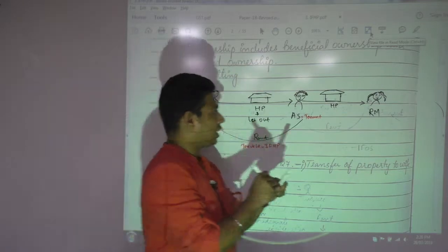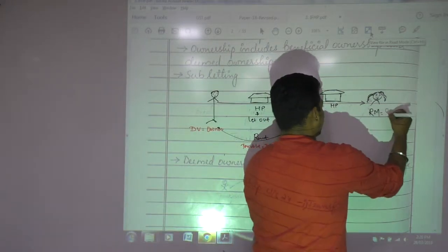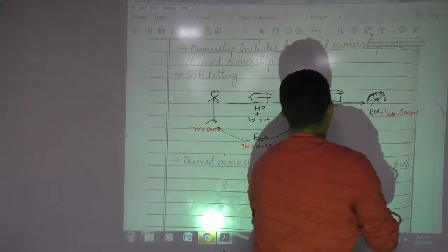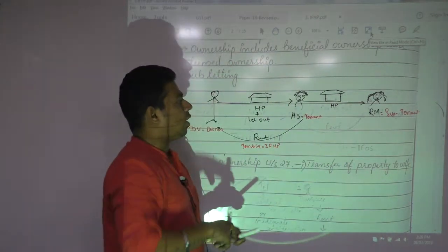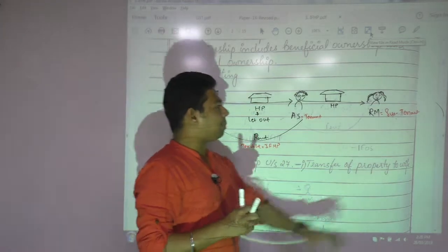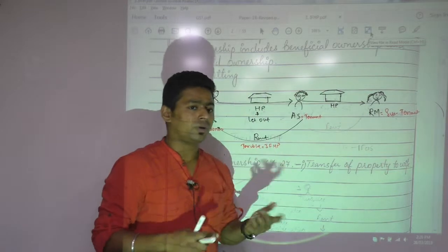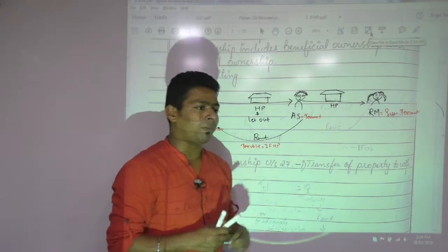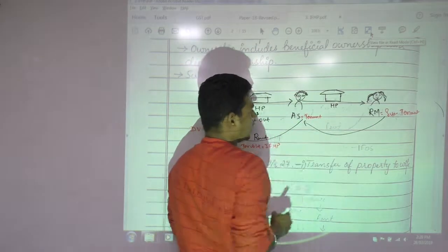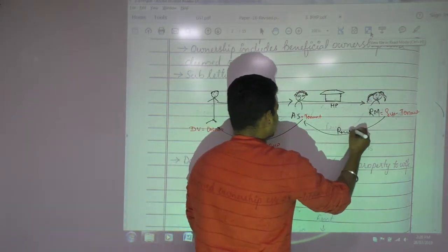Tenant to sub-tenant. Now who will pay rent to whom? Some people say sub-tenant to owner - no. Sub-tenant will pay rent to tenant. So rent will come from sub-tenant to tenant.